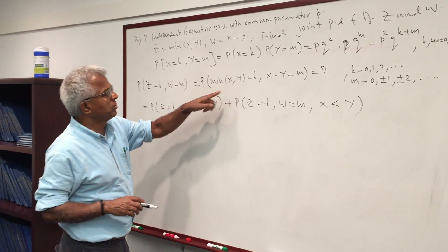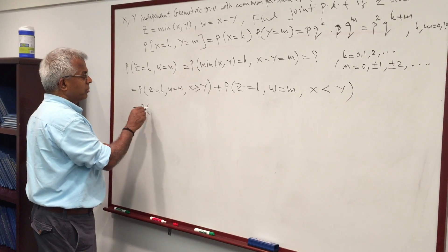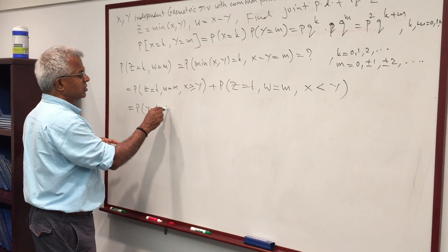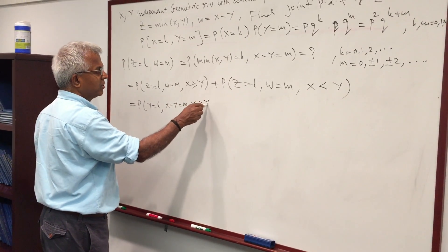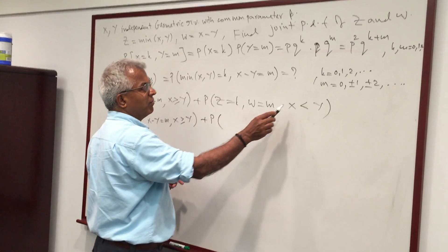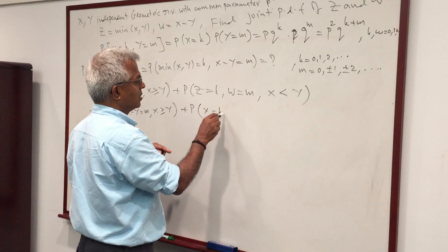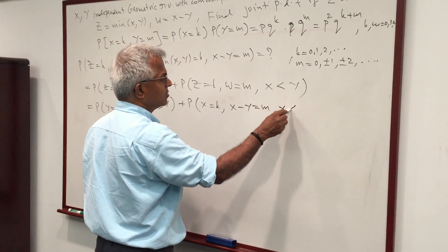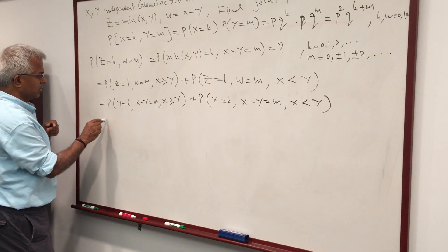But when X is greater than or equal to Y, the minimum is going to be Y. So we can rewrite the first term as P(Y=K, X−Y=M, X≥Y), and the second term, when X is less than Y, the minimum is X, so it becomes P(X=K, X−Y=M, X<Y).